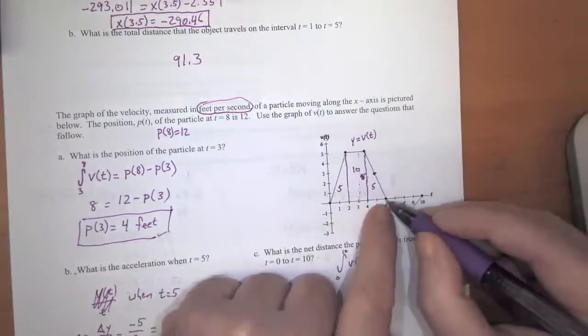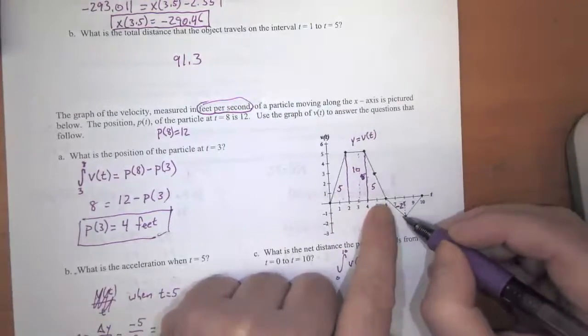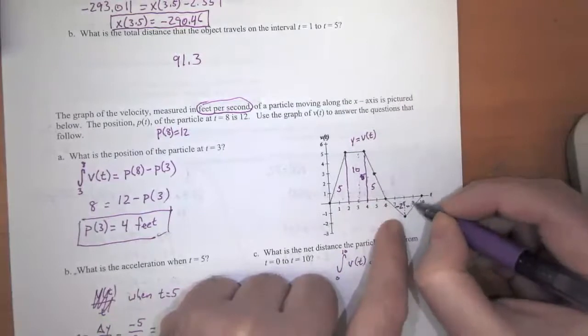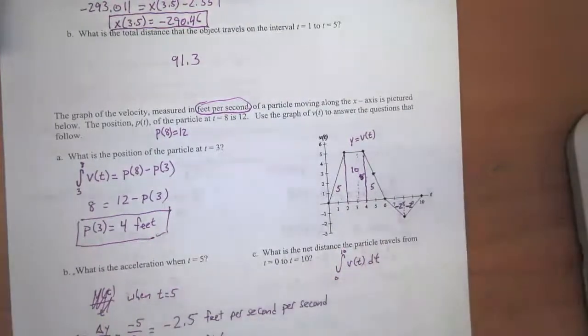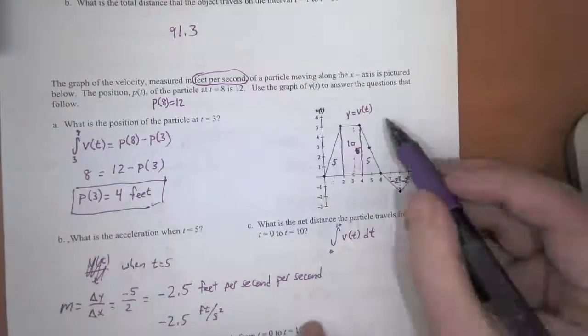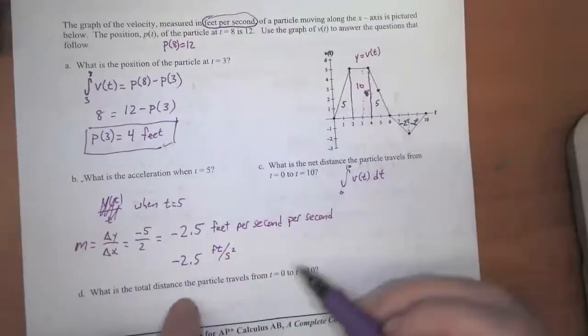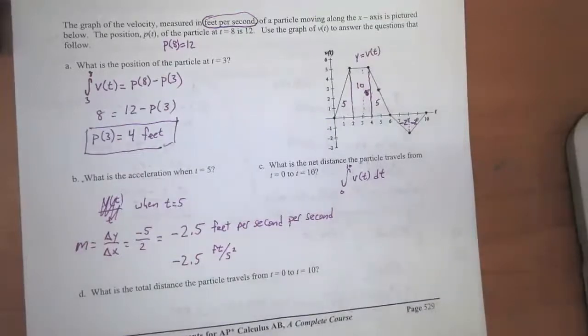And then down here, we calculated that this part of the graph was negative two, and it's going to be just negative two on the other side getting back up to the end. So now that we've calculated all of that, what are the answers to Part C and D going to be?